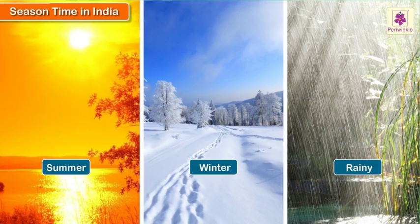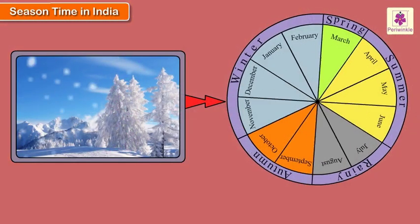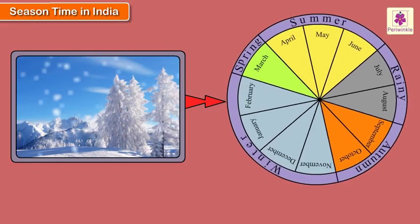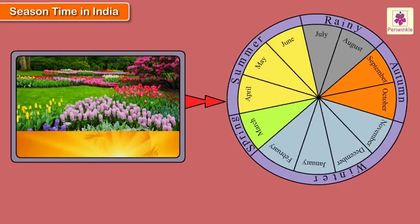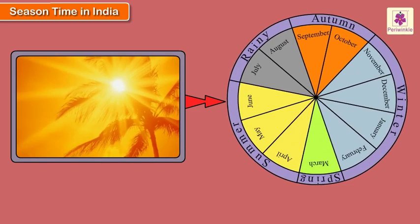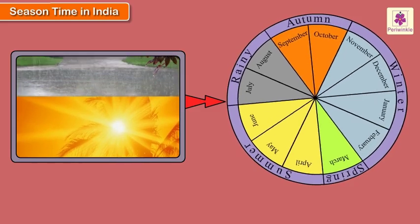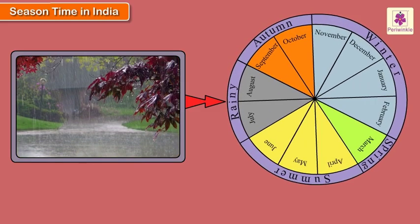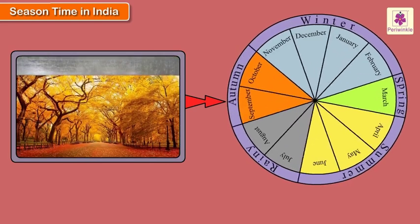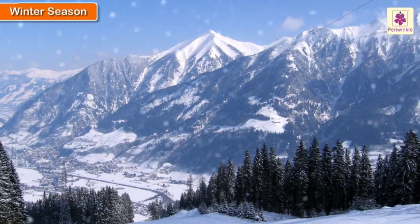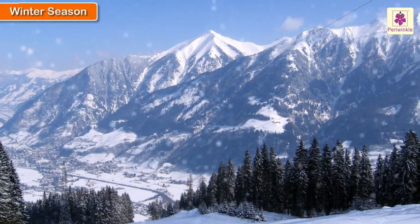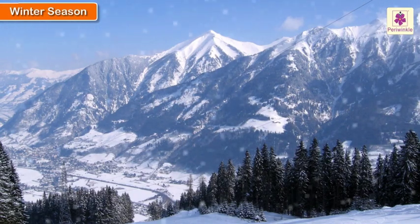In India, the seasons and their times are: winter from November to February, spring in March, summer from April to June, the rainy season in July and August, and autumn in September and October.